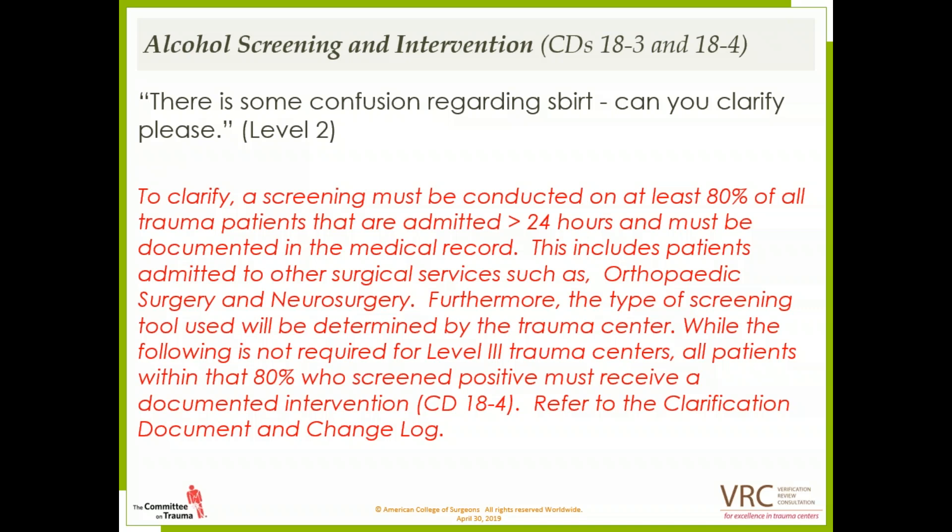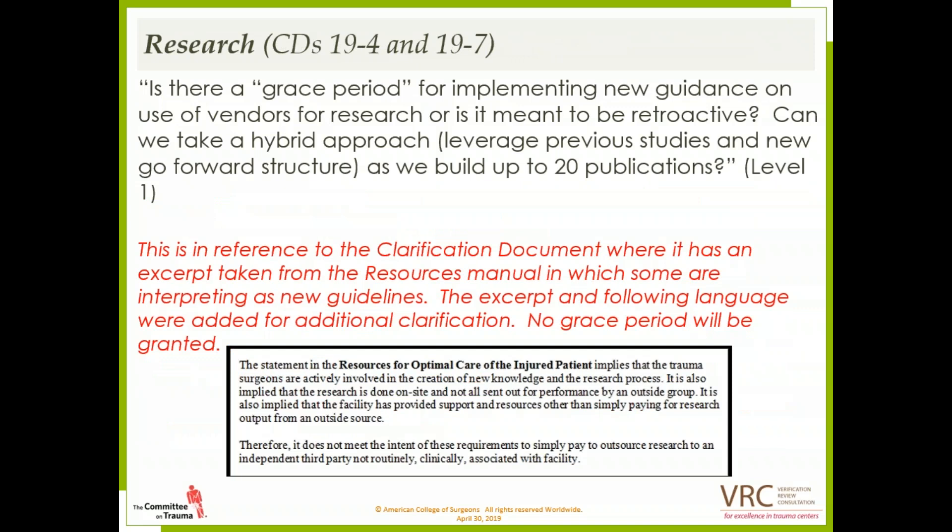On research, CDs 19-4 and 19-7: is there a grace period for implementing new guidance on use of vendors for research, or is it retroactive? Can we take a hybrid approach leveraging previous studies and a new go-forward structure as we build up to 20 publications? This references the clarification document where an excerpt from the resources manual is posted. The excerpt and following language were added for additional clarification, but no grace period will be granted.